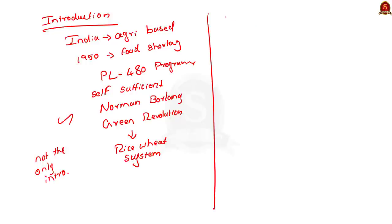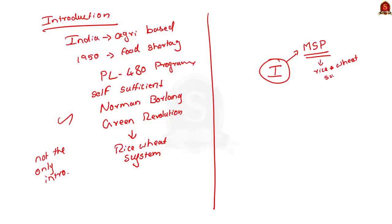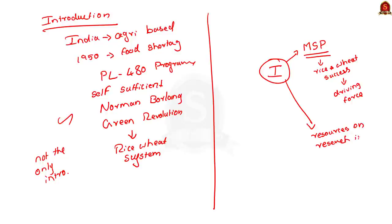First, let us focus on the first part of the question — factors responsible for the success of the rice-wheat system. One of the most important government initiatives is MSP, that is Minimum Support Price. Under MSP, there is efficient government procurement only in the case of rice and wheat. This assured purchase by the government is the main driving force behind farmers choosing to produce only rice and wheat. Second, the government allocated most of its resources and manpower in agricultural universities to focus only on research dealing with rice and wheat crops, giving these two crops an advantage over other competing crops.